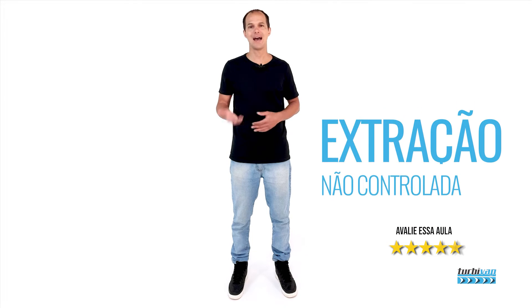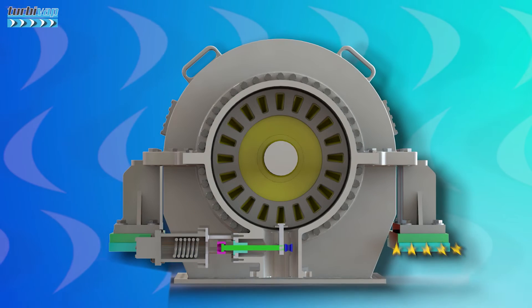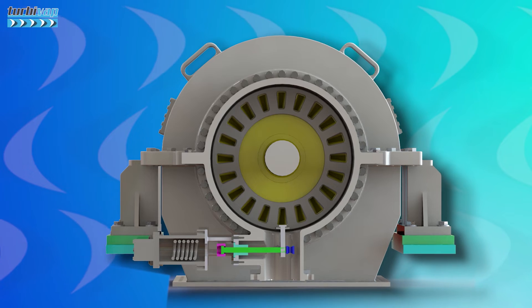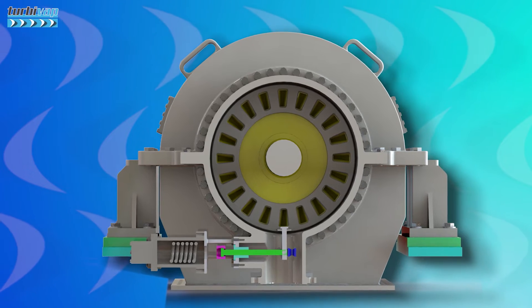Also, uncontrolled extractions, known as takes or bleedings: in this type of extraction, it is simply a removal of steam from inside the turbine, and its pressure depends on the current turbine load. This type of extraction is used for turbines in regenerative cycles.